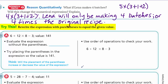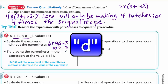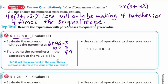Try this: rewrite the expression with parentheses to equal the given value. We have 6 plus 12 times 8 minus 3, with a value of 141. Evaluate the expression without parentheses first: I multiply first — 12 times 8 is 96 — so 6 plus 96 minus 3. That's 102 minus 3, which equals 99. So without parentheses the answer is 99, not 141.